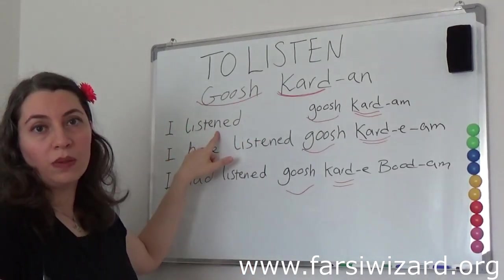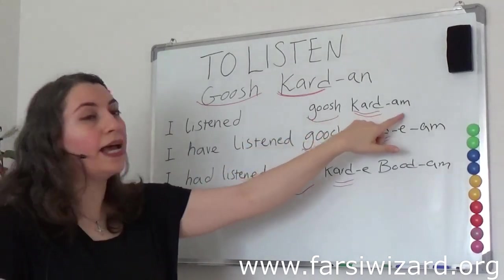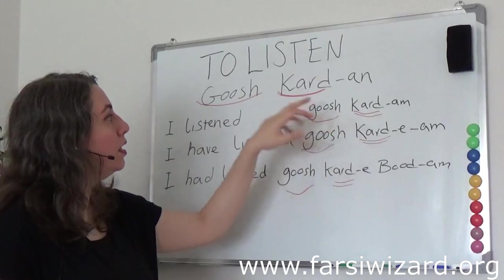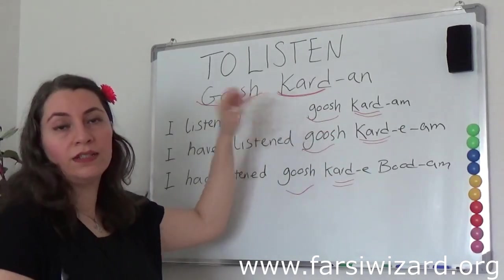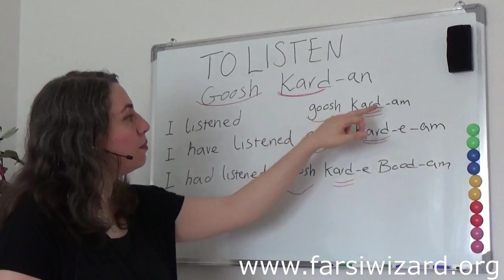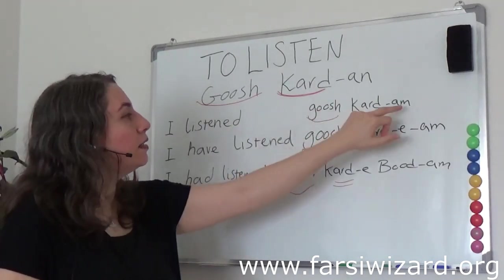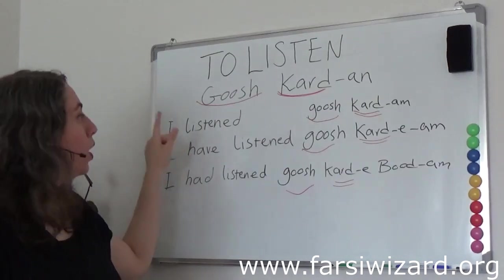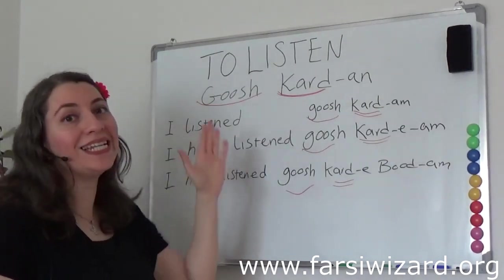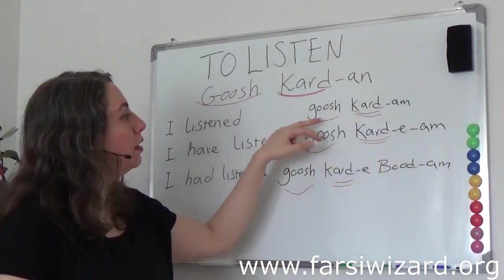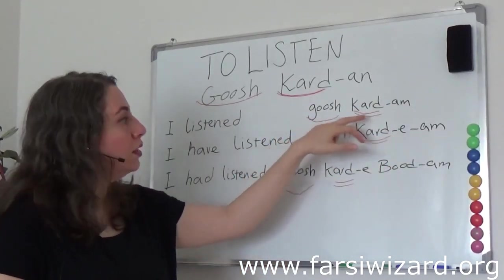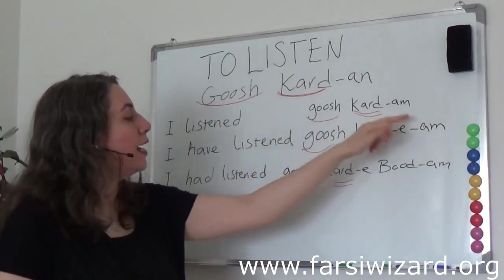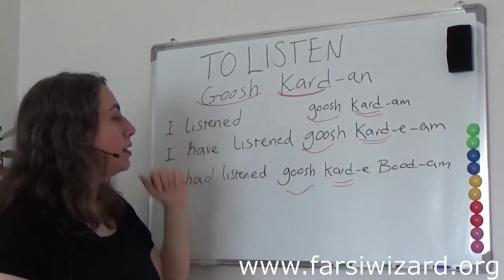I listen — which is simple past — gush kardan. How we make simple past is pretty easy: we look at the infinitive. The infinitive gives us access to the past stem; we put the past stem here. And the ending, am, because we're talking about 'I.' So 'I listened,' literally for us, is 'I did ear.' The ear is here — gush, did — kardan — and I: am. Gush kardam. I listened.